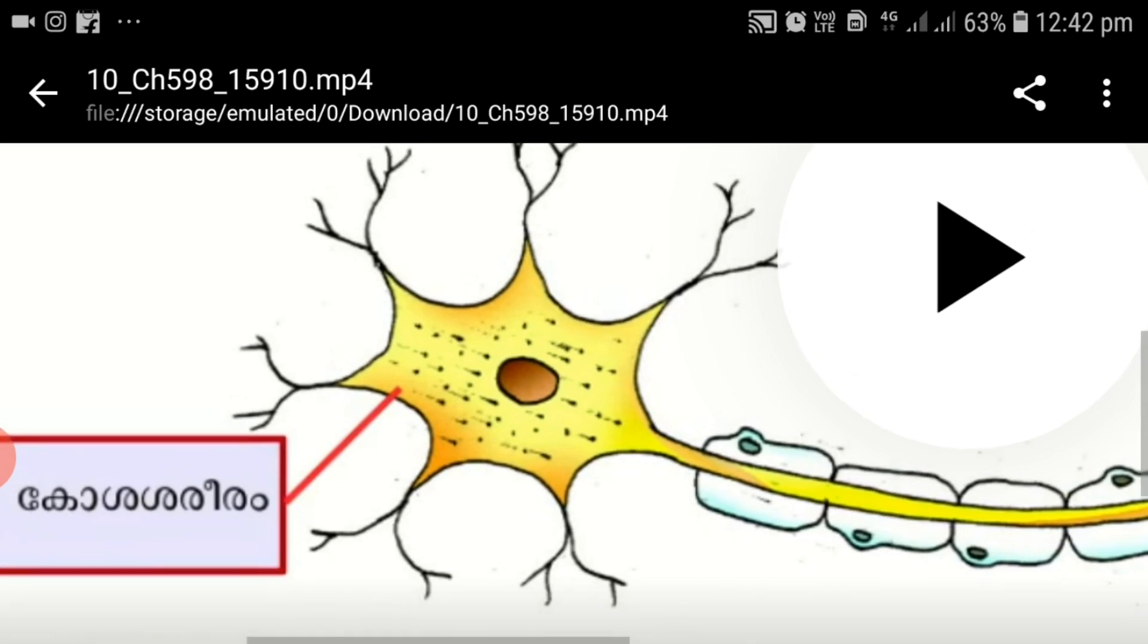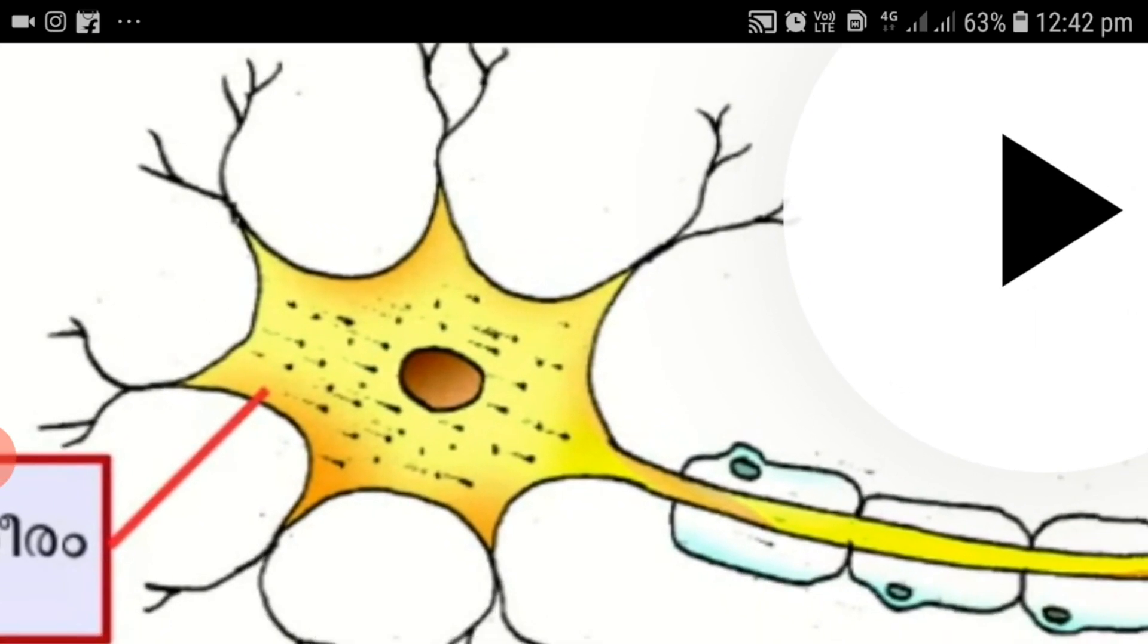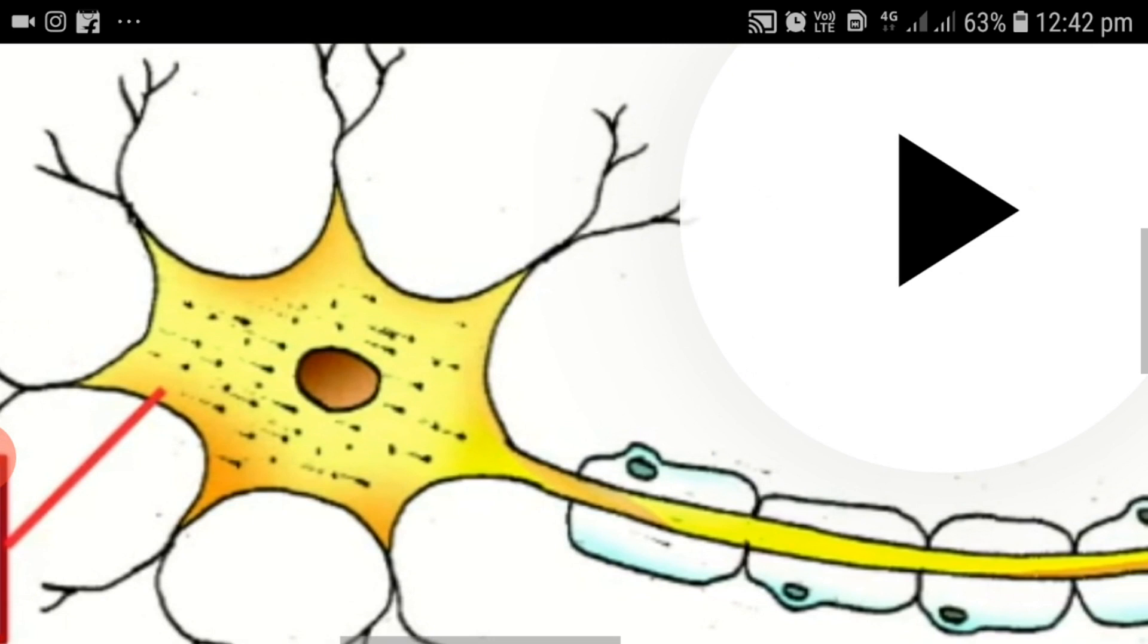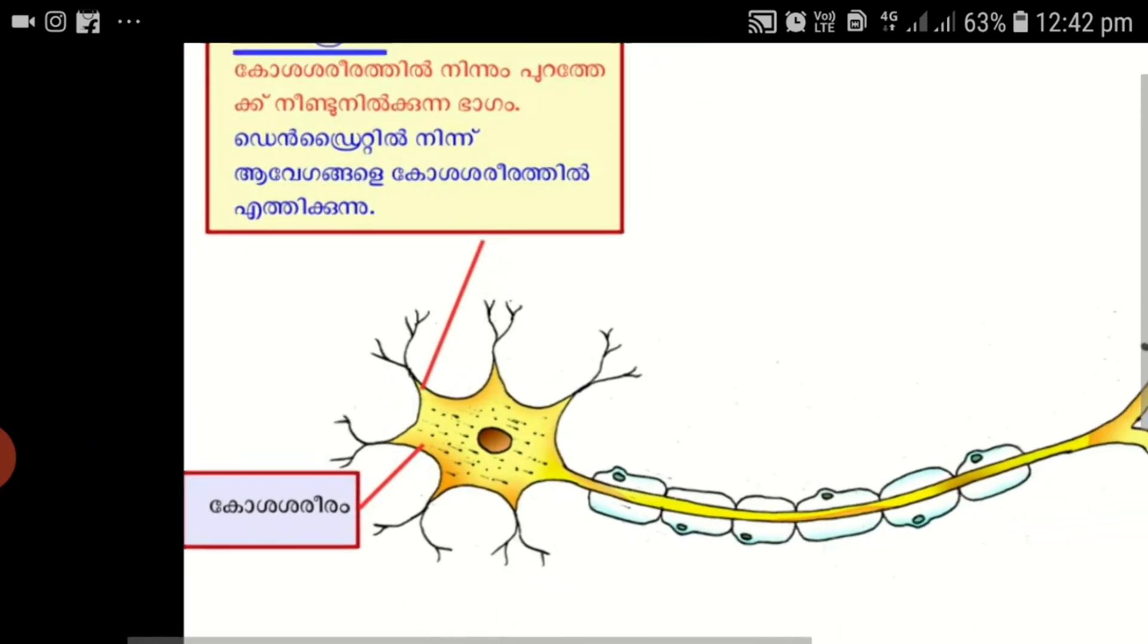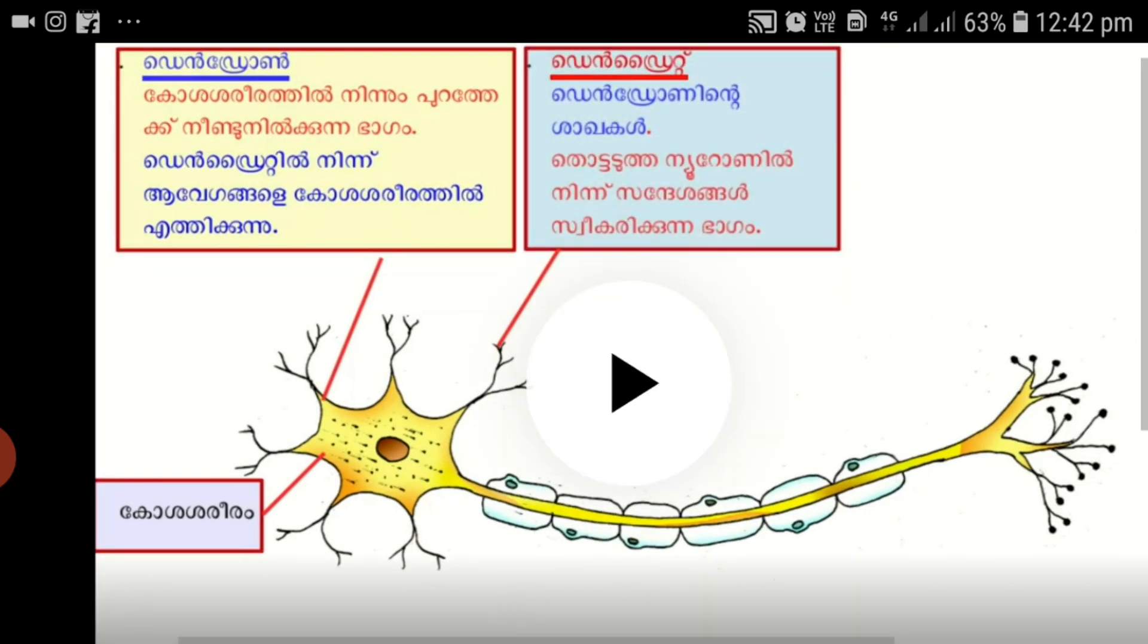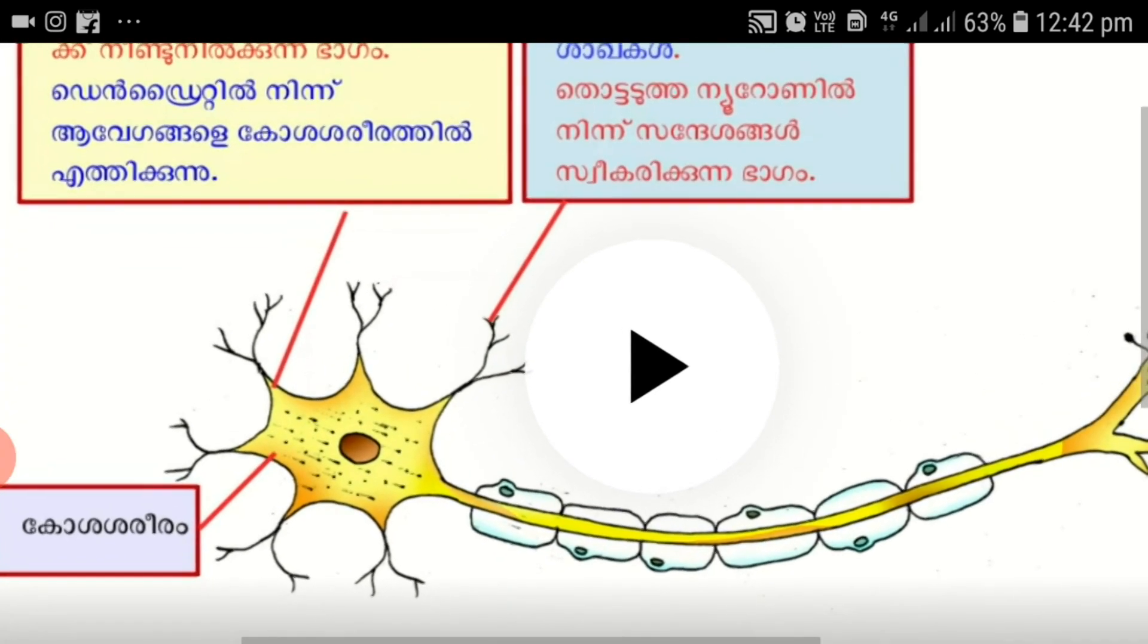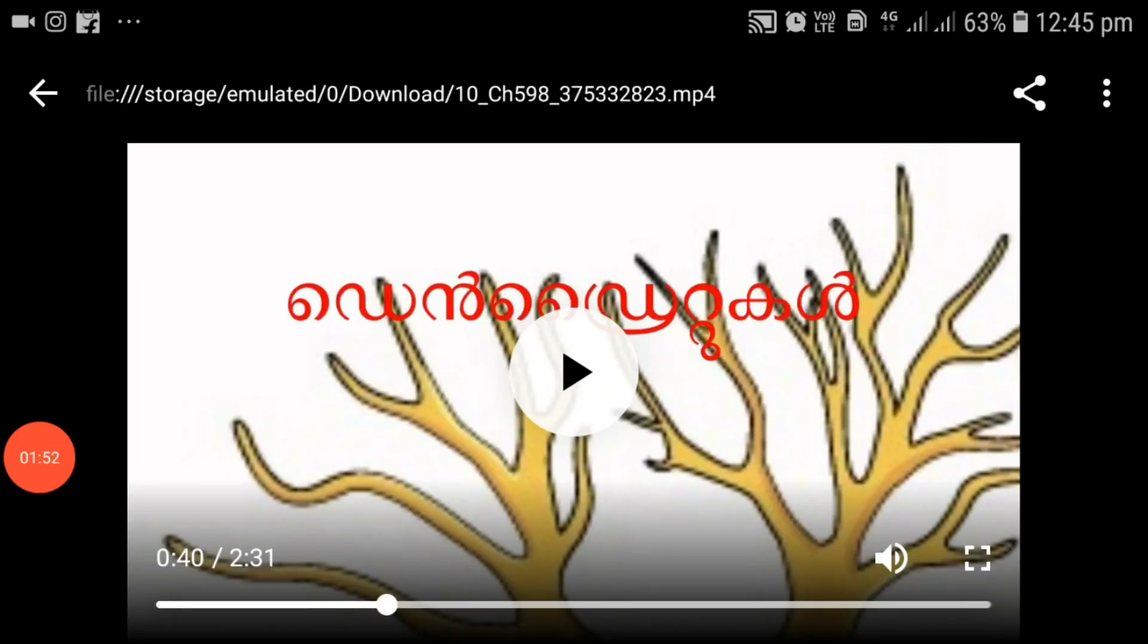You can see these filament-like outgrowths vary in size. Some are very small outgrowths, but a long outgrowth can also be seen here. Now we are going to study the names of these outgrowths. The smaller filaments are called dendrons, and dendrons have certain branches which are known as dendrites. The small branches of dendrons are called dendrites.